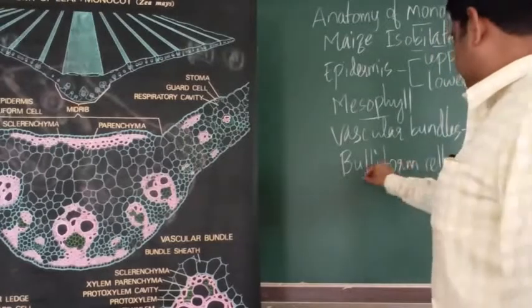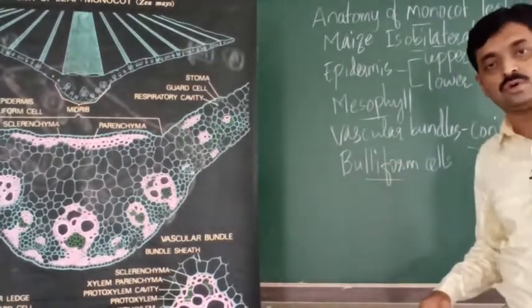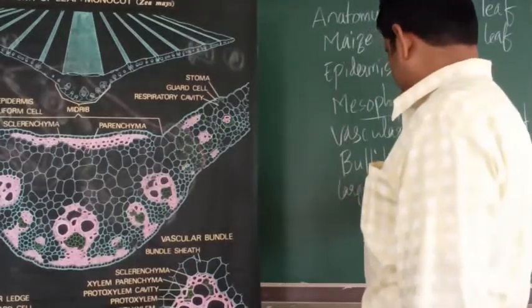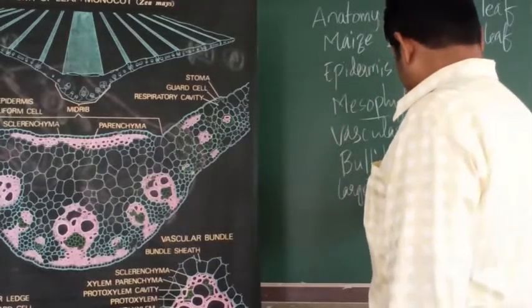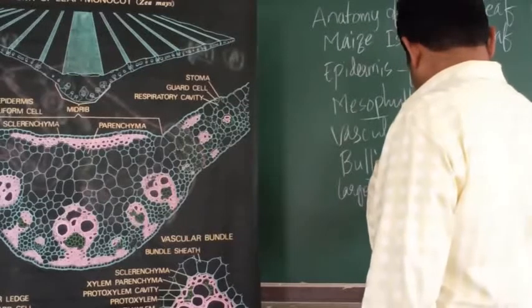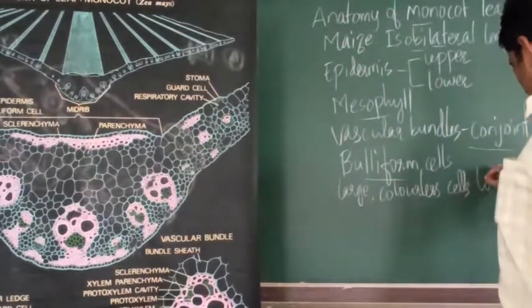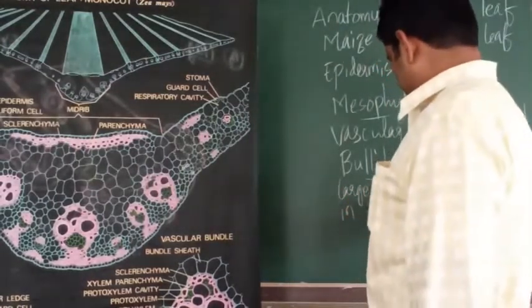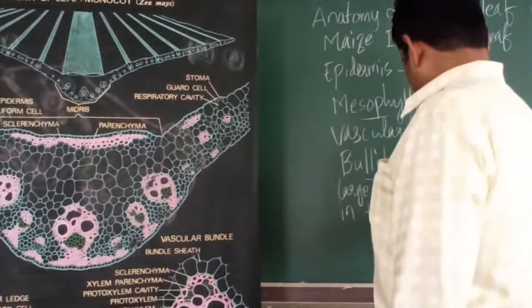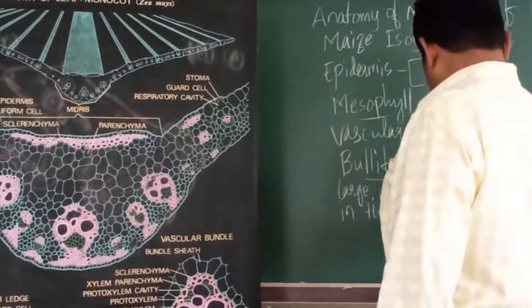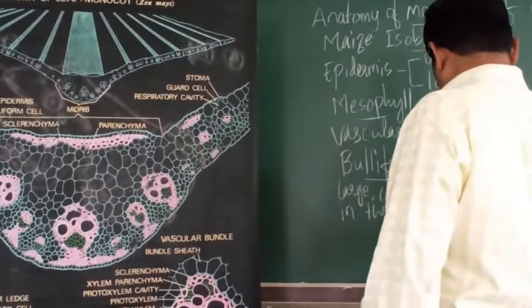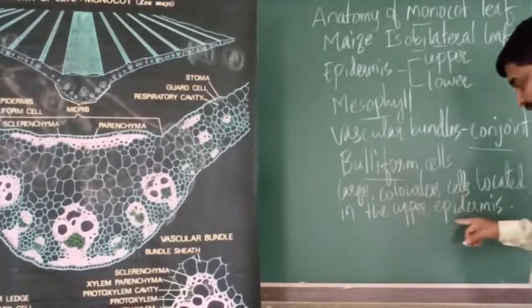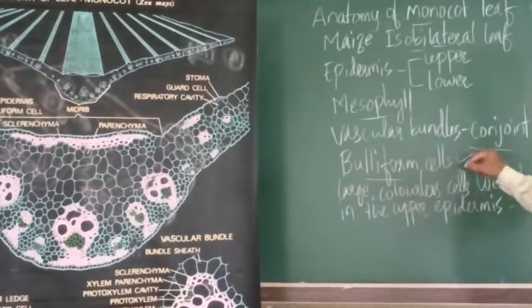One more important point is bulliform cells. Bulliform cells are large, colorless cells located in the upper epidermis.